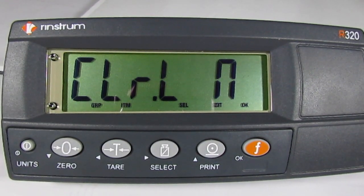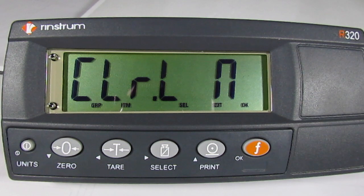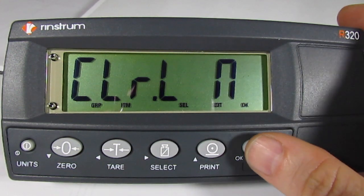It will ask if we want to clear dot L, which stands for clear linearity points. It will say N for no, which is acceptable. We will hit OK.